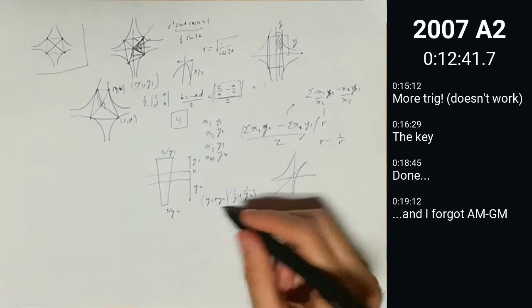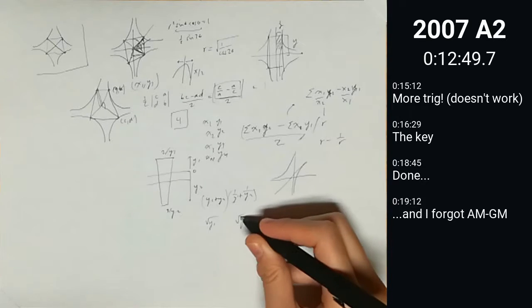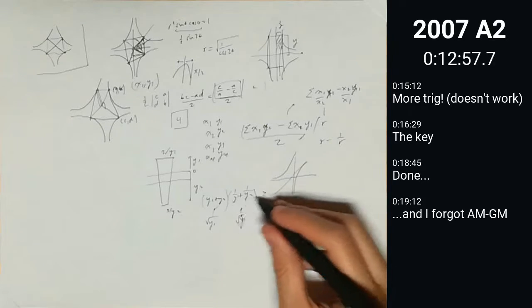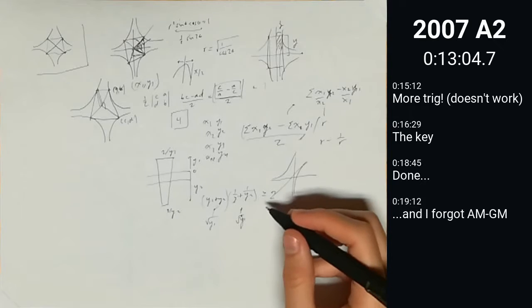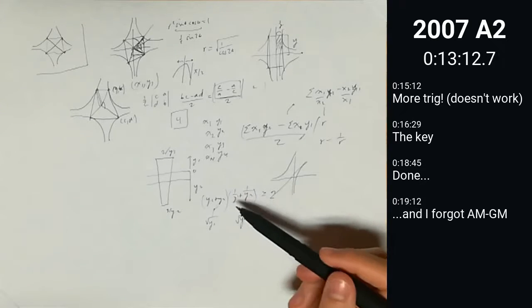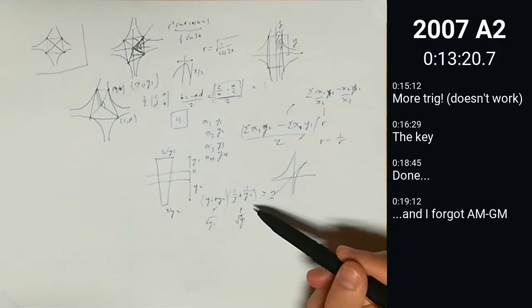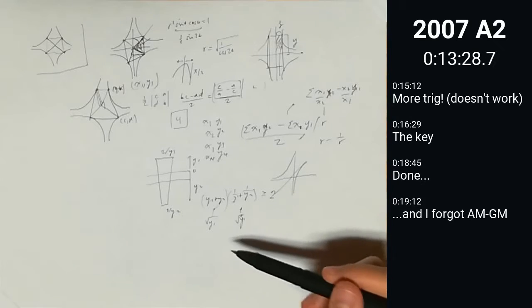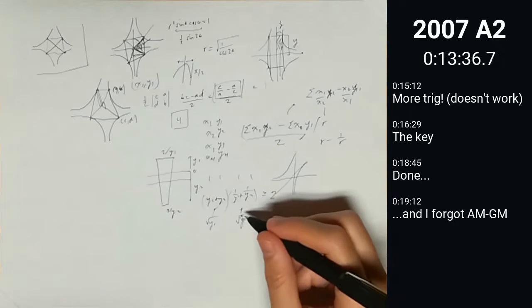What's the minimum value of this? Well, we can use Cauchy-Schwarz, I think, possibly. Yeah, we use Cauchy-Schwarz on vectors with square root of y1 and square root 1 over y1, and then this would be length, length, and this would have to be at least the dot product, which is going to be 2. Height times base. Height, so essentially the average base, yes.